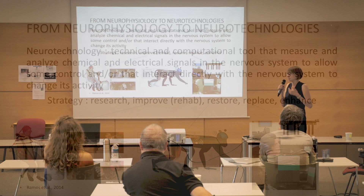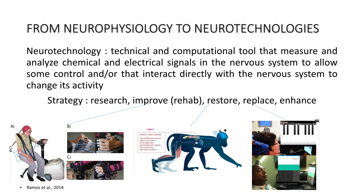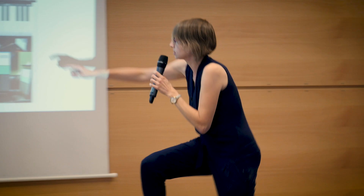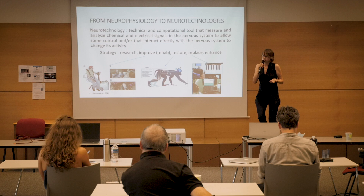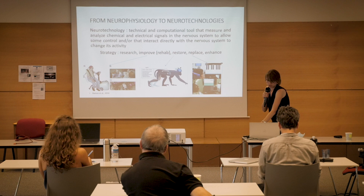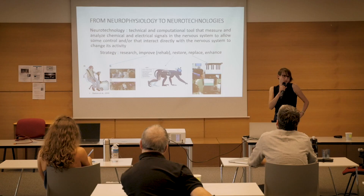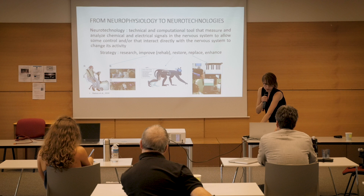Another strategy, quite used in research at least, is to replace totally. Instead of using your own limb, you use an external device — either a robotic arm or a mainstream interface like an app on your phone or computer. Here, two patients have an implanted device and their brain activity is decoded to control these devices, but only in the lab at the moment. You can also have strategies that aim to enhance cognitive abilities of people, like students or anyone who wants to improve cognitive abilities.